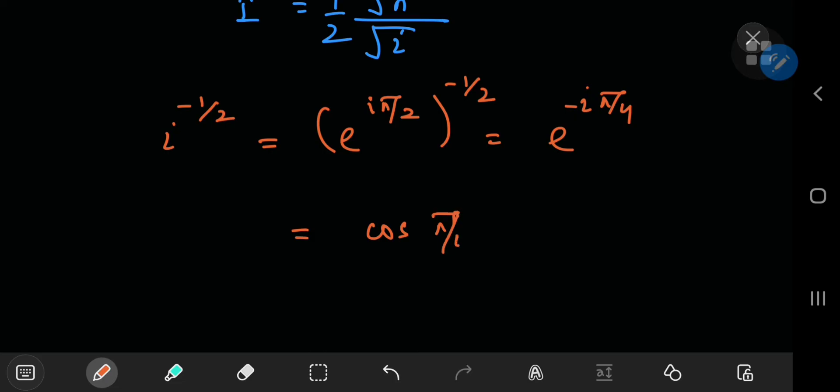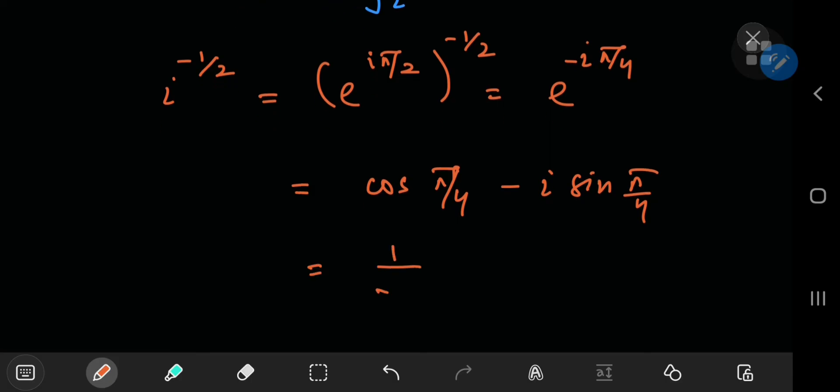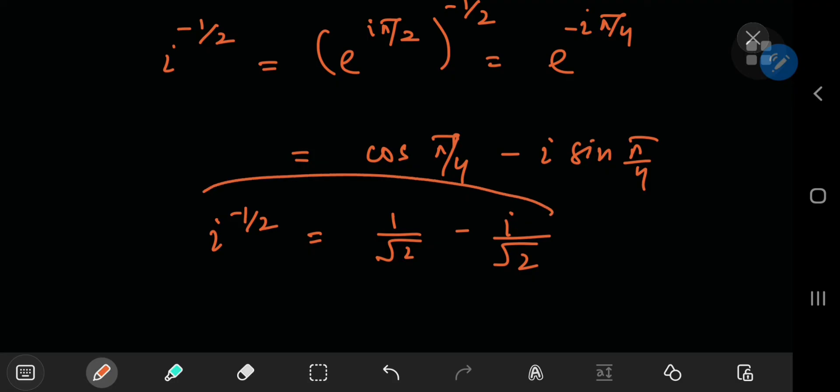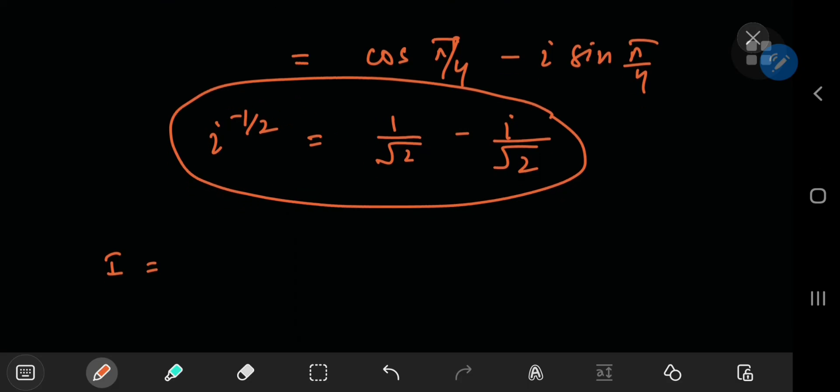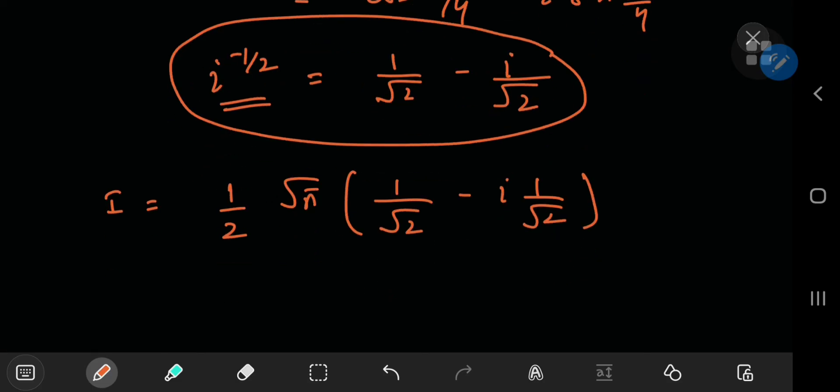And we'll have cosine of π/4 minus i sine π/4, which is 1/√2 minus i/√2. So that's the reciprocal of the square root of the imaginary unit. So remembering that our integral was actually 1/2 times the square root of π times this factor here, then we have 1/√2 minus i times 1/√2.